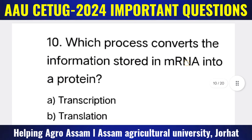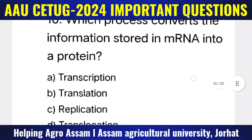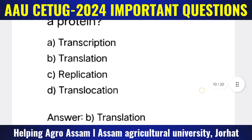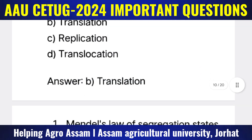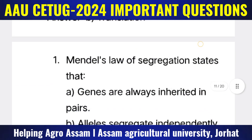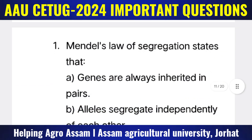Question 10 (Molecular Basis of Inheritance): Which process converts the information stored in mRNA into a protein? Options: (A) Transcription, (B) Translation, (C) Replication, (D) Translocation. The correct answer is option B — translation.